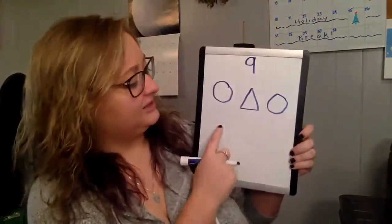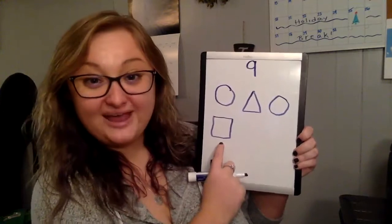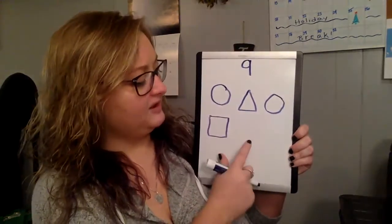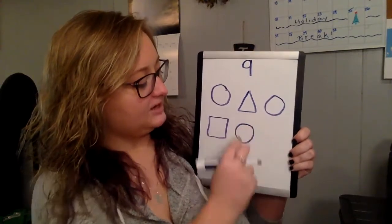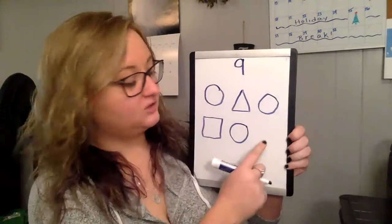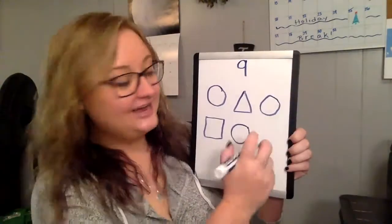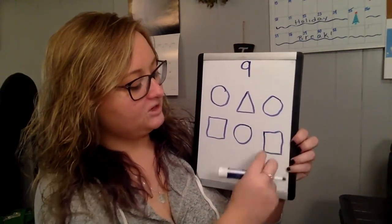Let's do another. We're gonna draw a square. Then we're gonna draw a circle. So if we have square, circle, what comes next? A square. Good job.